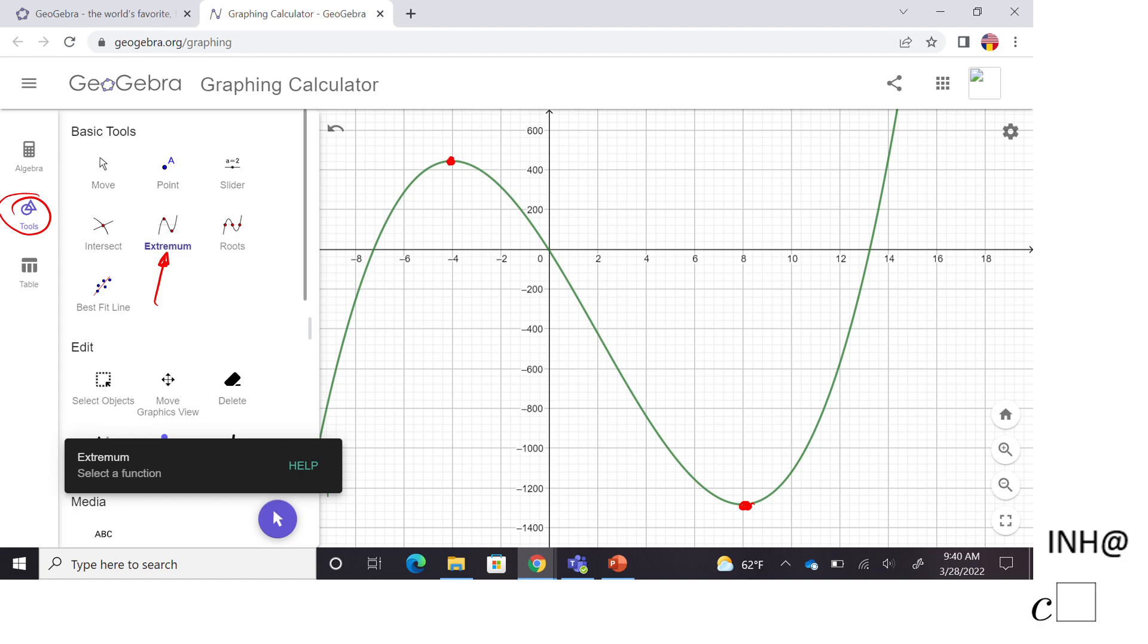Once you click on that, you get the same message. You click anywhere on your function, not necessarily on the minimum or relative minimum or relative maximum, and you get them. A is the relative maxima, B is the relative minimum.